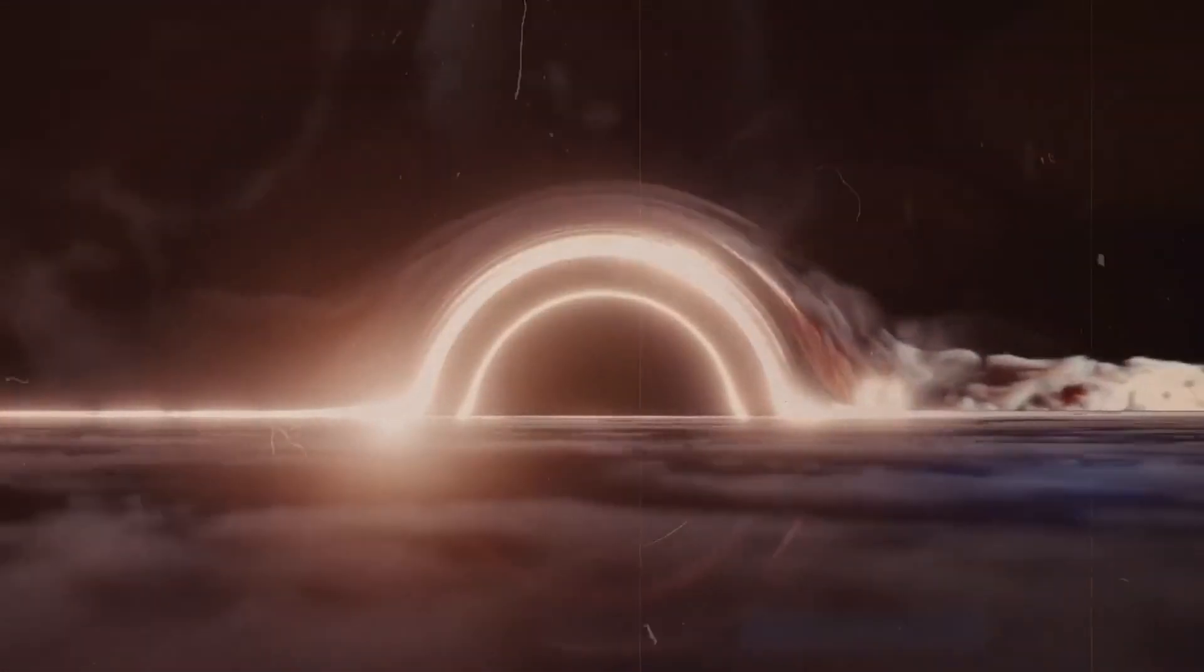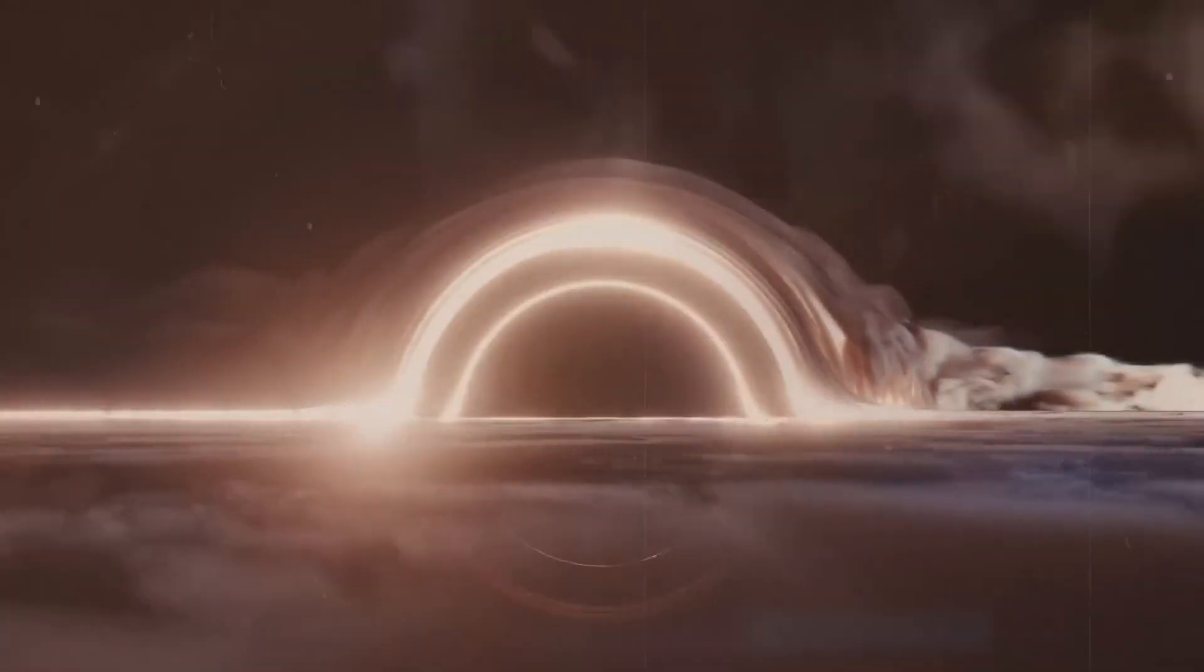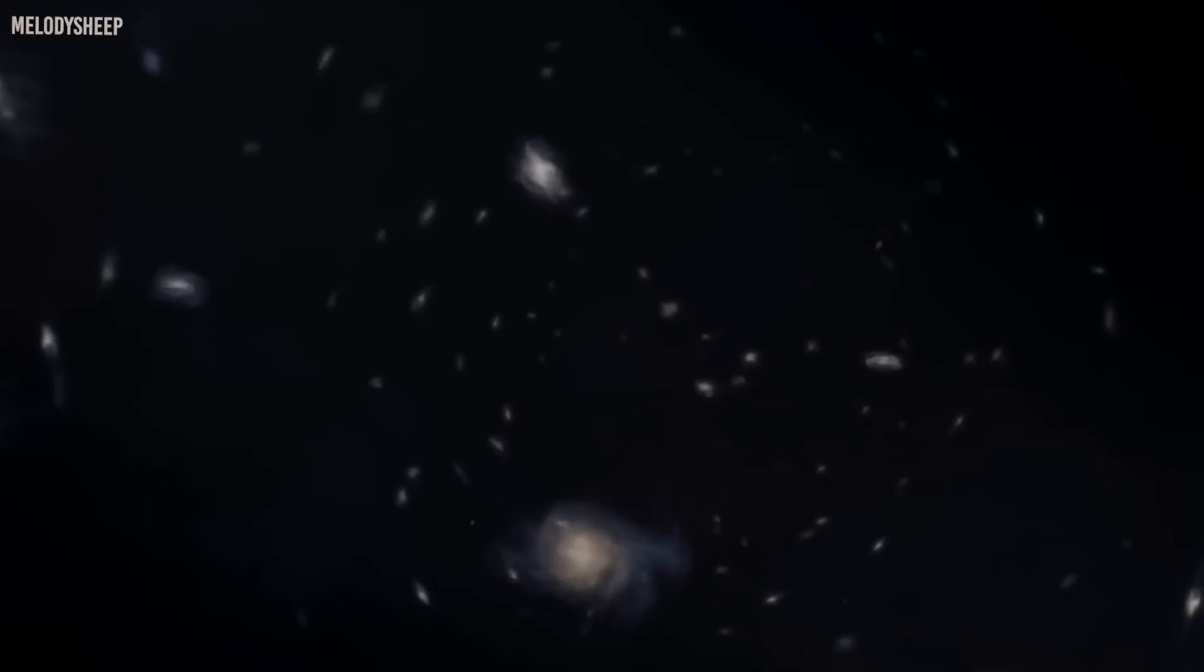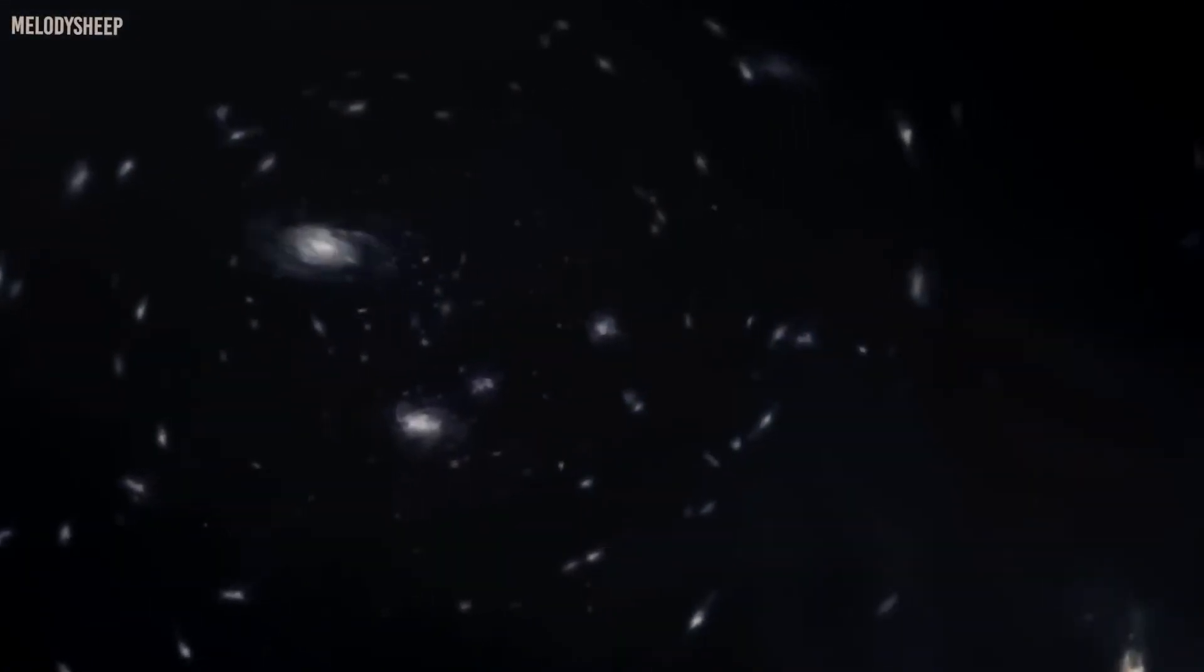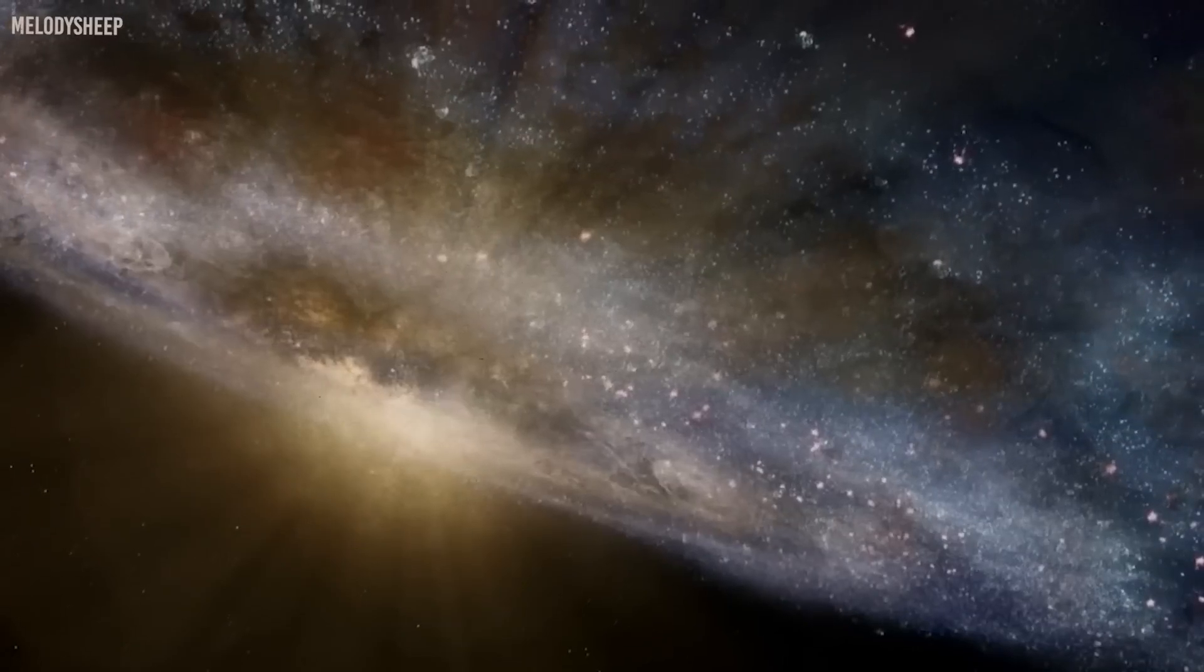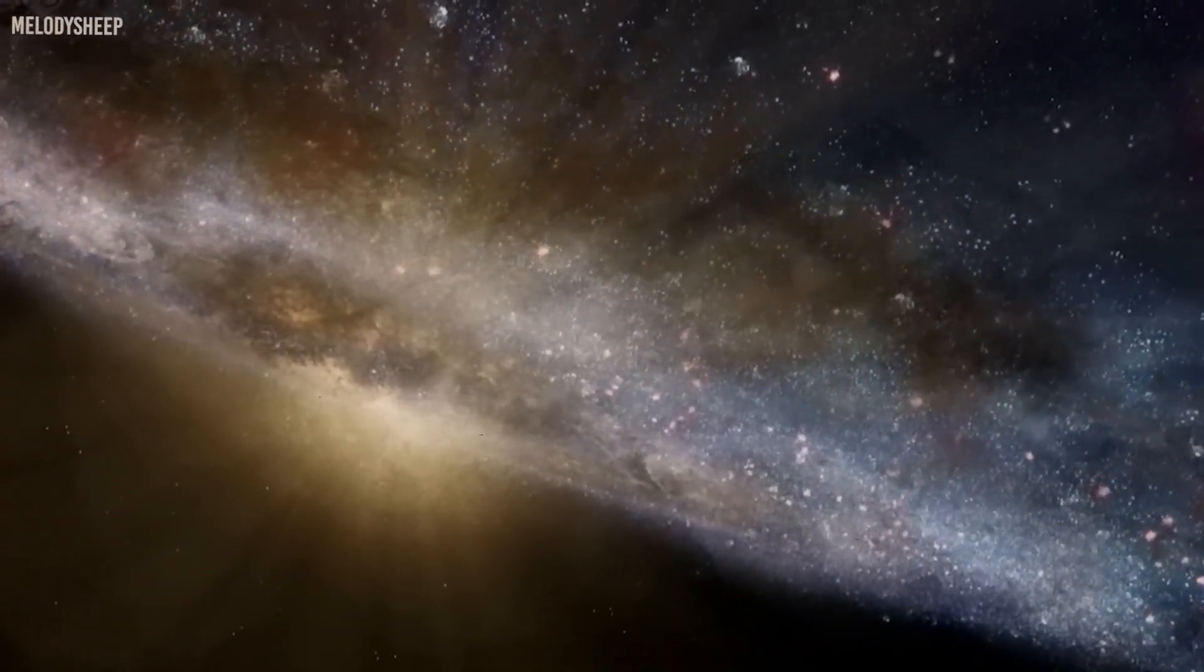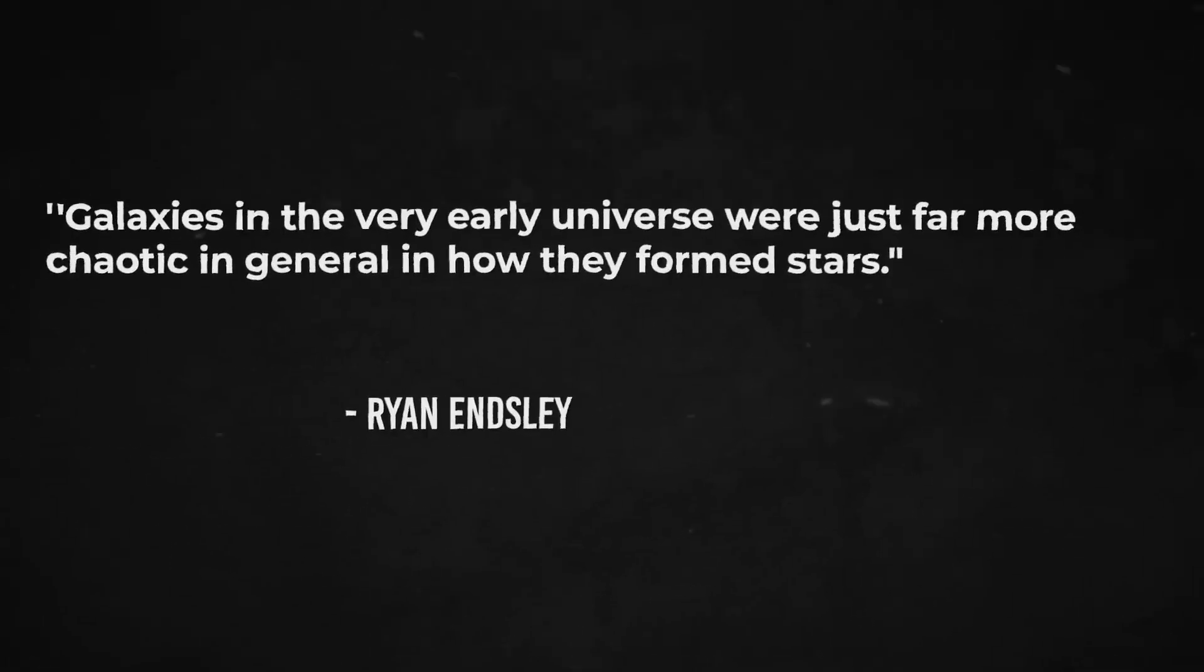Now, a second JADES team that has been researching galaxies between 500 and 850 million years after the Big Bang, or between 5 and 8 minutes of the two-hour movie describing the universe, believes it has the solution to the age-old query. In this next scene of the universe, we are starting to actually see the impact of galaxy formation on the composition of the large-scale universe. Galaxies in the very early universe were just far more chaotic in general in how they formed stars.